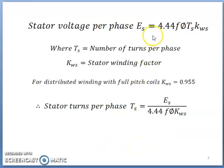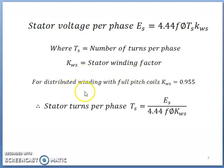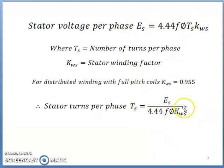Stator voltage per phase Es is given by Es = 4.44 * f * phi * Ts * Kws, where Ts is number of stator turns per phase and Kws is the stator winding factor. The stator winding factor is the product of pitch factor and distribution factor. For full pitch winding, pitch factor is 1, and for 60-degree spread winding, the distribution factor is 0.955. Therefore for distribution winding with full pitch coils, Kws equals 0.955. From this equation, stator turns per phase Ts equals Es divided by 4.44 * f * phi * Kws.